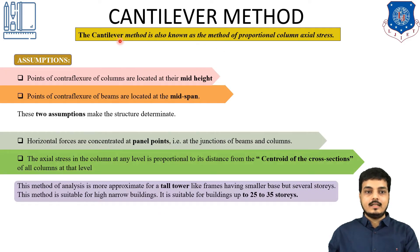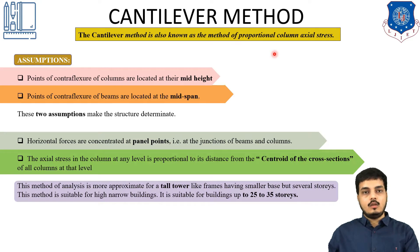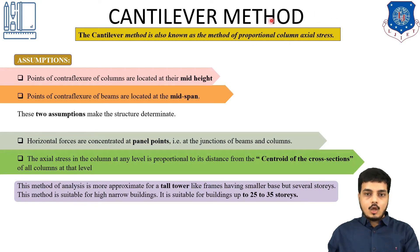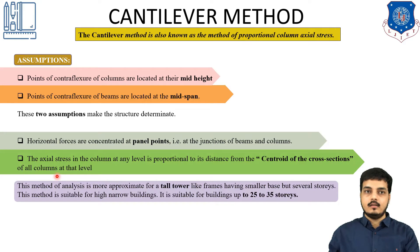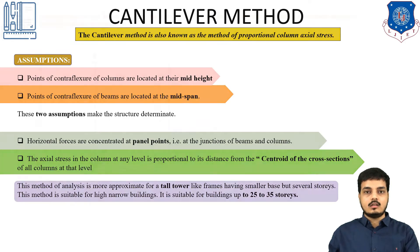The cantilever method is also known as the proportional column axial stress method. In the previous portal method, column shear was proportional to column stiffness. Here, we will also take care of axial stress. One thing to keep in mind: axial stress in all columns at any level is proportional to the distance of the center of the cross-section of each column from the centroidal axis.